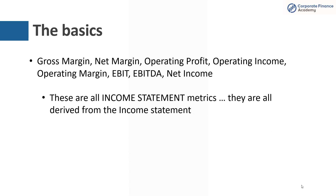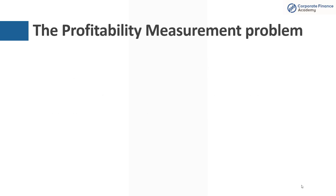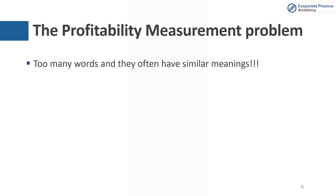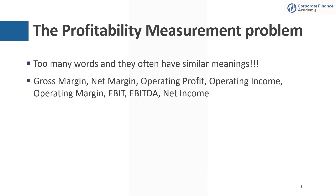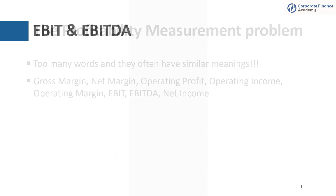Ultimately, these are all income statement metrics. We have the three financial statements — the income statement, the balance sheet, and the cash flow statement — but these numbers are all from the income statement. So, the profitability measurement problem: there are too many words that often have similar meanings. Let's start with EBIT and EBITDA.